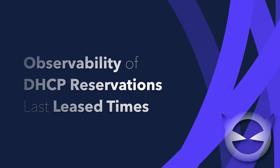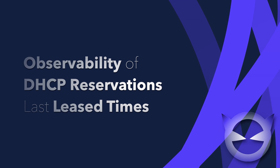This feature leverages DHCPmon to work out when there was a last lease on this address. It then updates the last lease time field on the BAM to track this information.